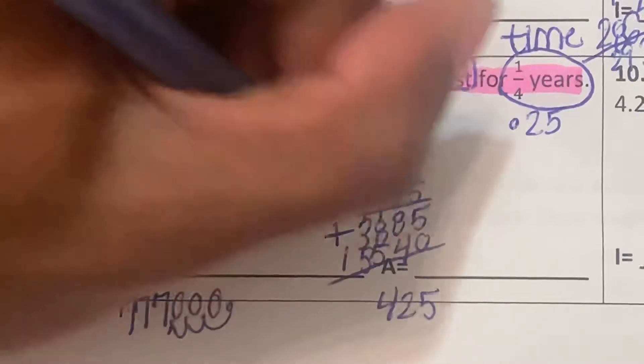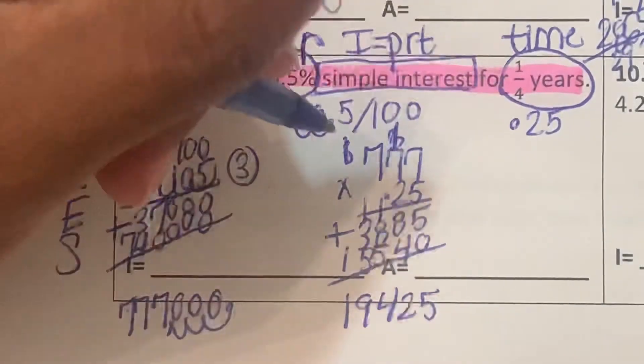Let's add these up. 5 plus 0 is 5. 8 plus 4 is 12, carry the 1. 1 plus 8 is 9 plus 5 is 14, carry the 1. 1 plus 3 is 4 plus 5 is 9. And then we have bring the 1 straight down.